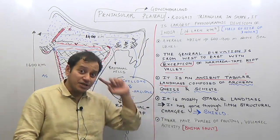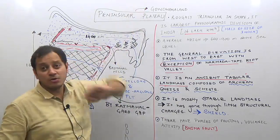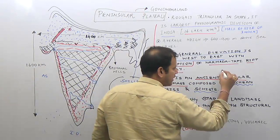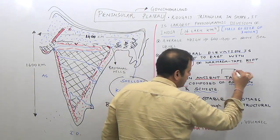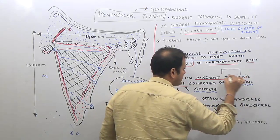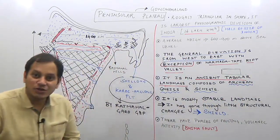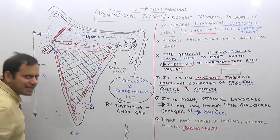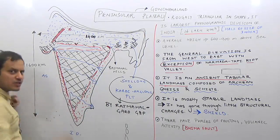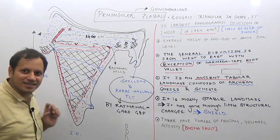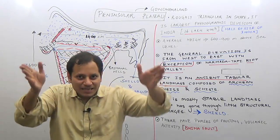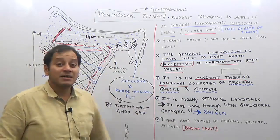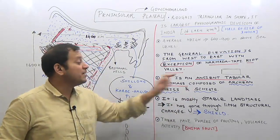Why 'ancient'? Because it is part of the ancient Gondwana landmass. Why 'tabular'? A table has a flat top with steep sides — similarly, the peninsular plateau is flat-topped with steep sides: Vindhya-Satpura, the Western Ghats, and the Eastern Ghats. Therefore it is called a plateau. It is an ancient tabular landmass composed of Archean Gneiss and Schist.